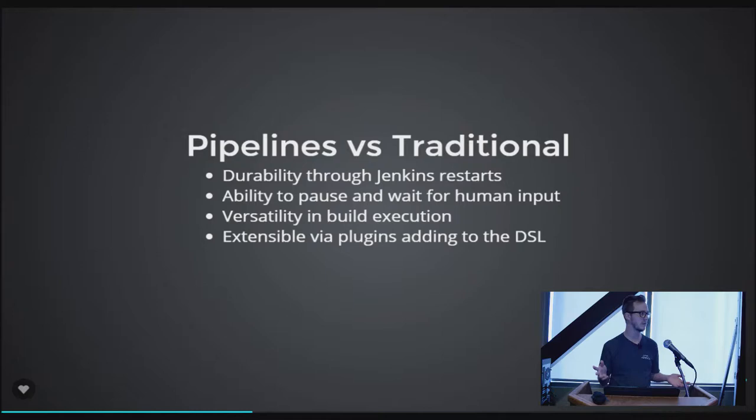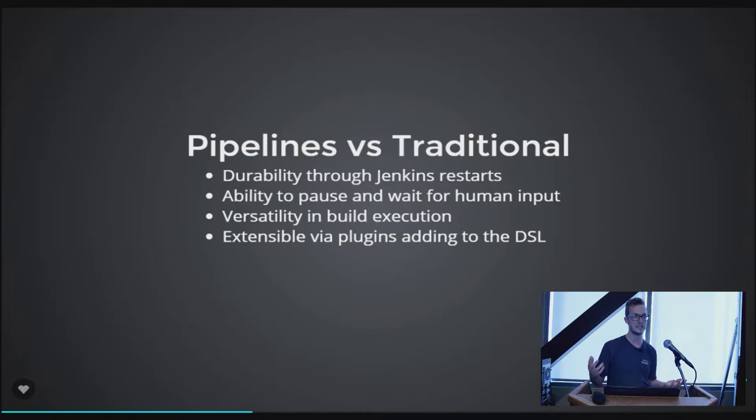With pipelines, when the Jenkins master goes down, all the build agents continue running the pipeline through to completion — or pause if they need human input. When the master comes back up, the build agents reconnect and update it with all the console output and status, so you don't lose any of that information.